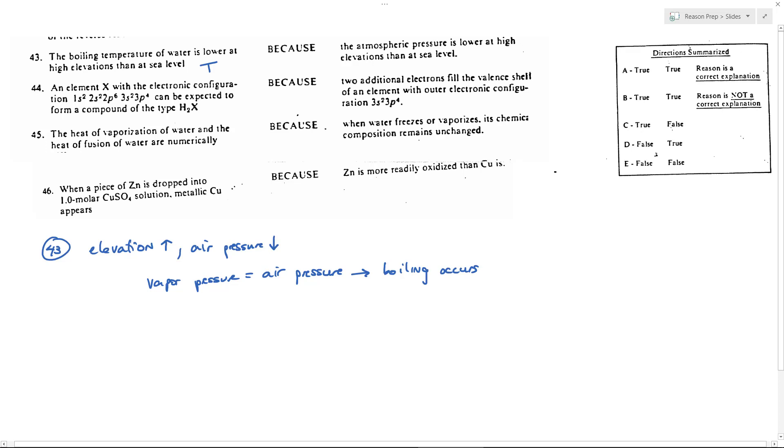The higher you go up in elevation, the lower the boiling point. Atmospheric pressure is lower at high elevations than at sea level, and this explains why the boiling point decreases. Your vapor pressure doesn't need to get as high, and the boiling point is not as high in terms of temperature. So 43 is true true CE, which means choice A.